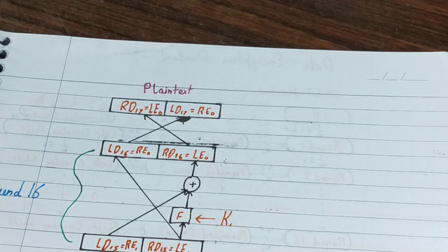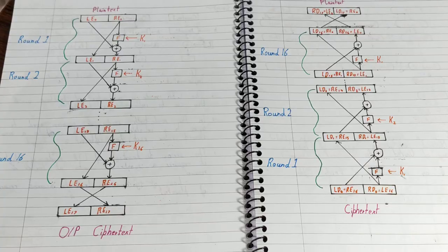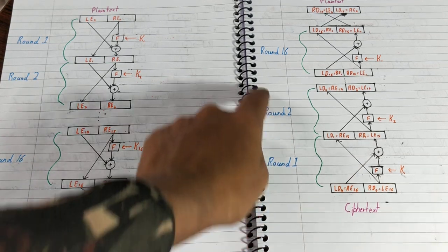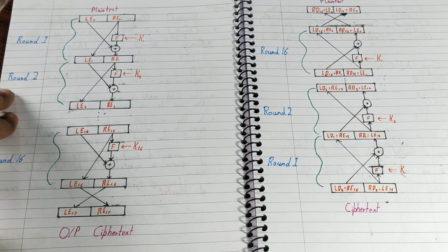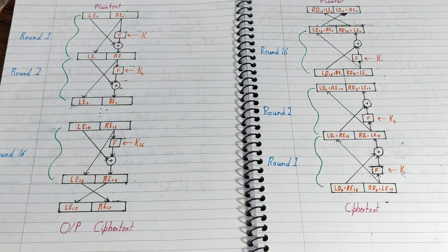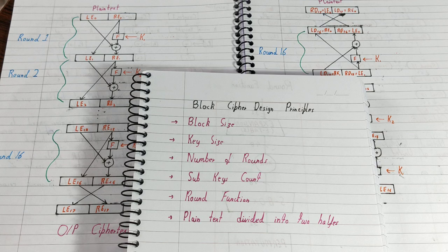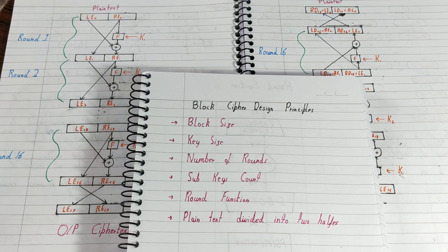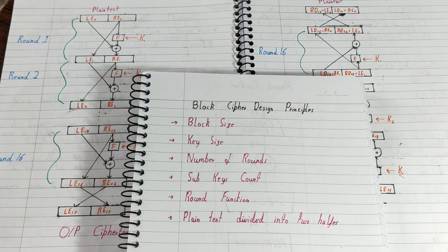I hope you understood how to encrypt and decrypt using Feistel block cipher structure. To summarize, this is the diagram: we encrypt top-down and decrypt bottom-up. Now let's discuss the design principles. The first is block size — the size of the plaintext that has been entered. The standard block size being used is 64 bits, but depending on the amount of data you can alter it.